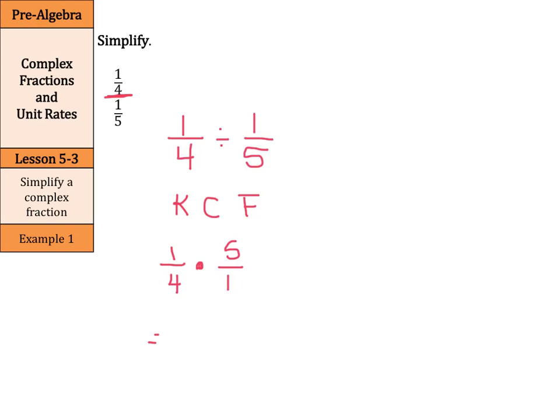Now, finish this by multiplying the numerator by the numerator and the denominator by the denominator. One times five is five. Four times one is four. So you could have this answer as five-fourths, or one and one-fourths. Either way works.